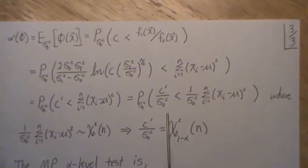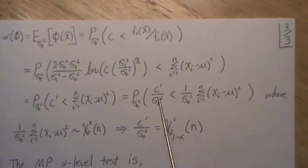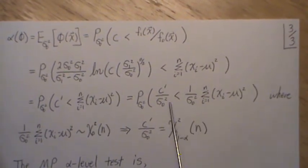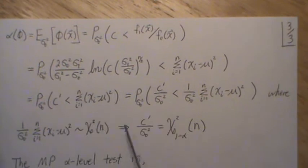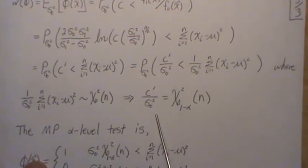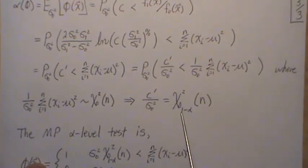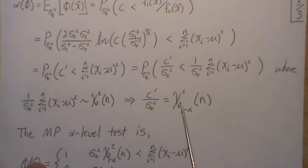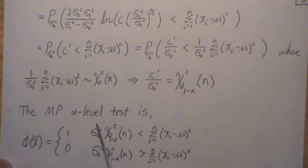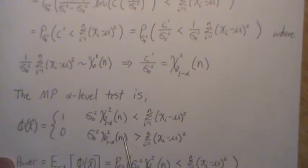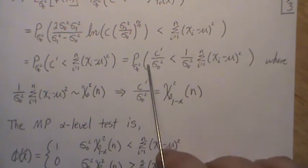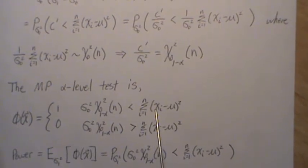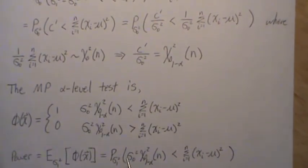We just need to find the value in a chi-square distribution with n degrees of freedom such that the probability of being greater than it equals alpha. That creates our alpha level test. The rejection region uses chi-squared sub alpha with n degrees of freedom — the value where the tail area on the right equals alpha. So the most powerful alpha level test is: reject H naught if the sum of (xi minus mu) squared is greater than sigma naught squared times the chi-square critical value.